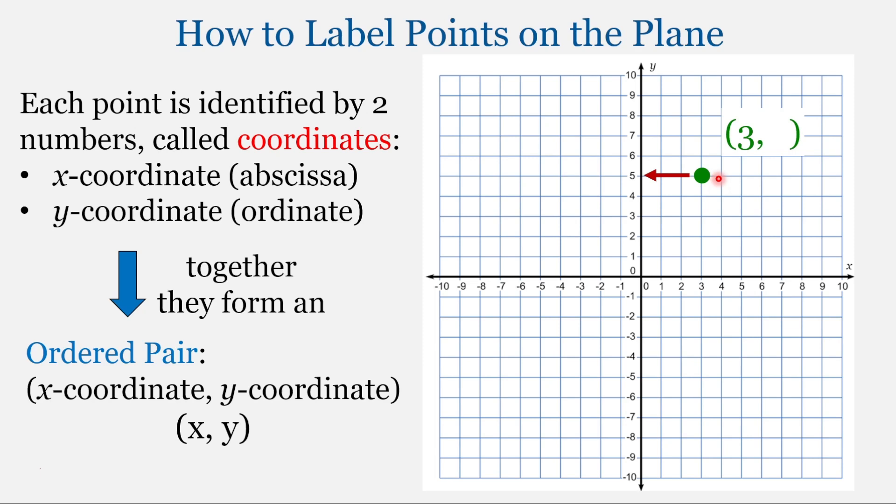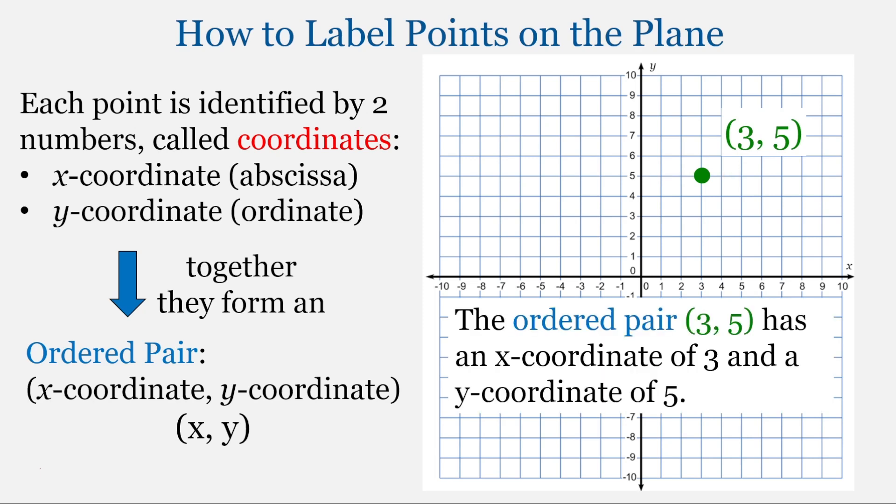And then we're going to do the same with the y-coordinate. We're going to put a line from the point to the y-axis. This line will be perpendicular to the y-axis and parallel to the x-axis. In this case, that number is 5. So the y-coordinate is 5. The ordered pair has an x-coordinate of 3 and a y-coordinate of 5.